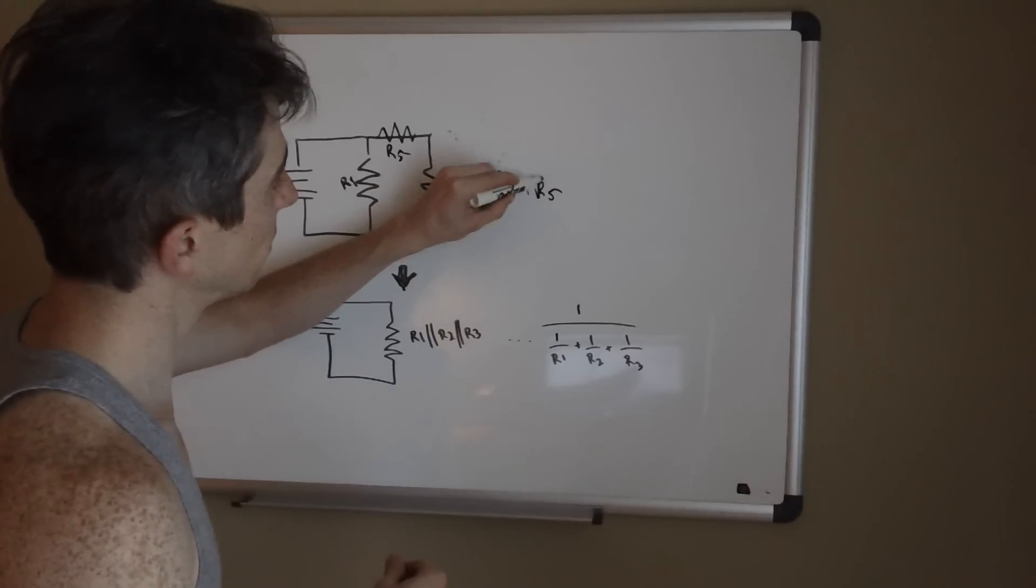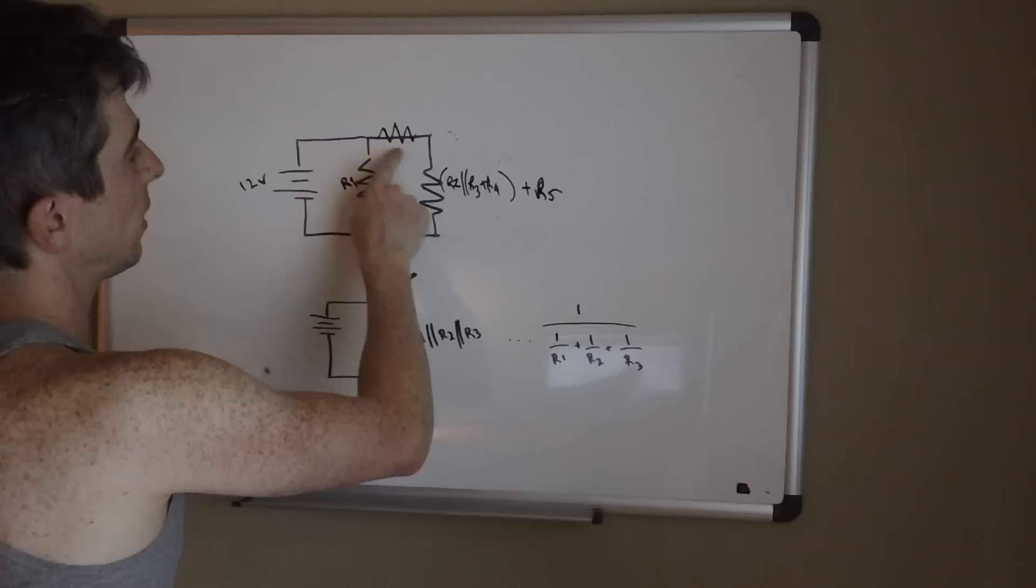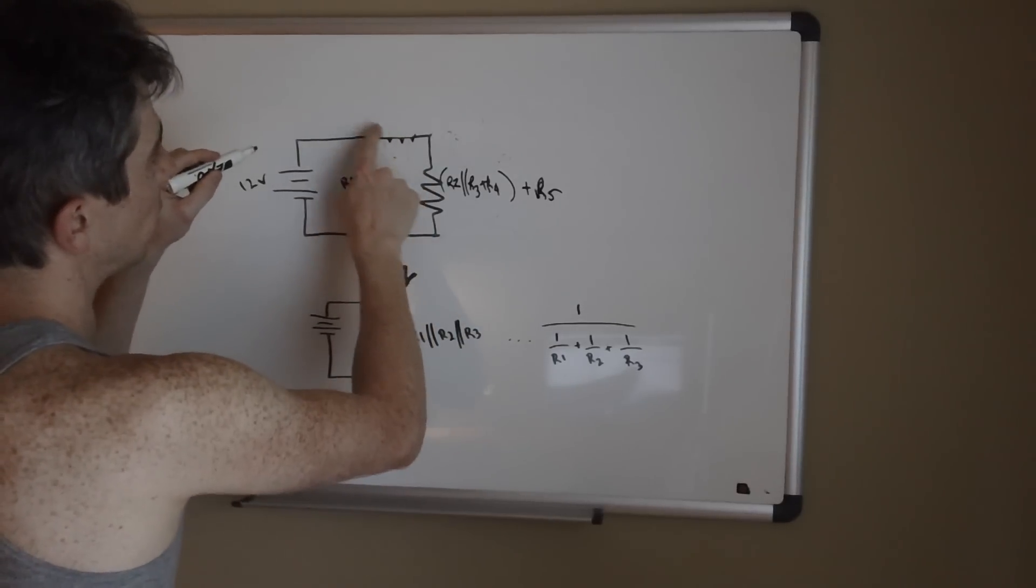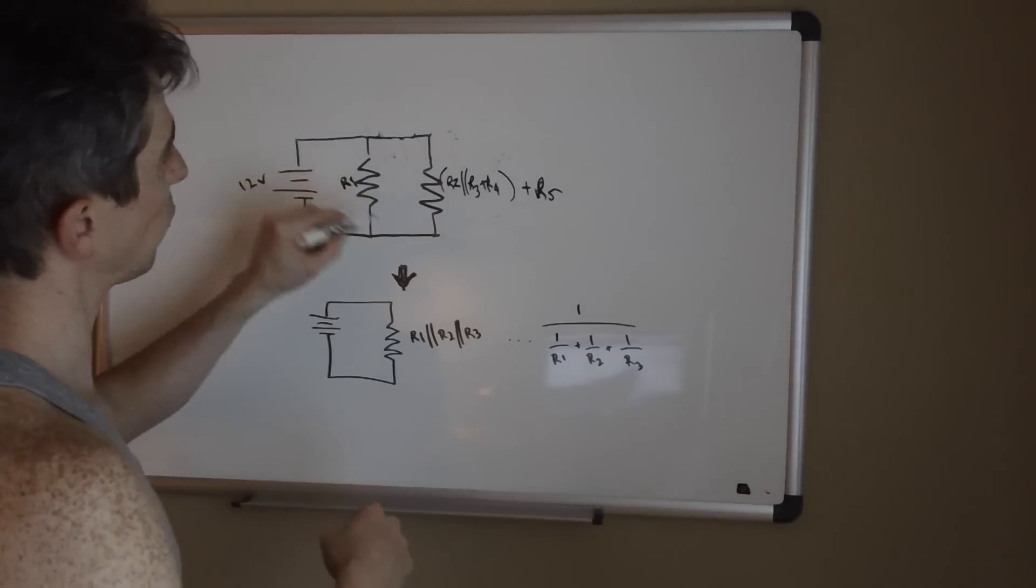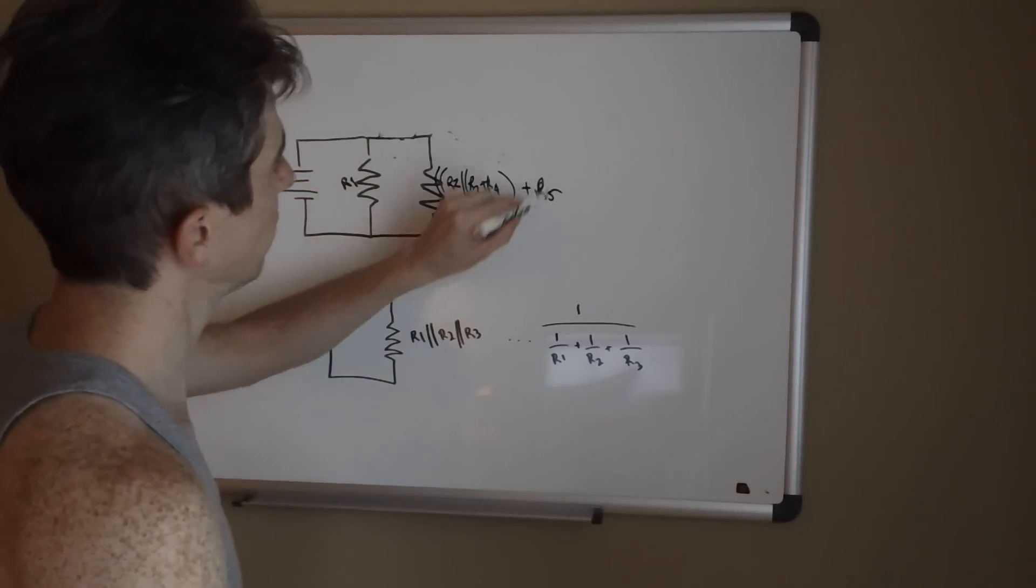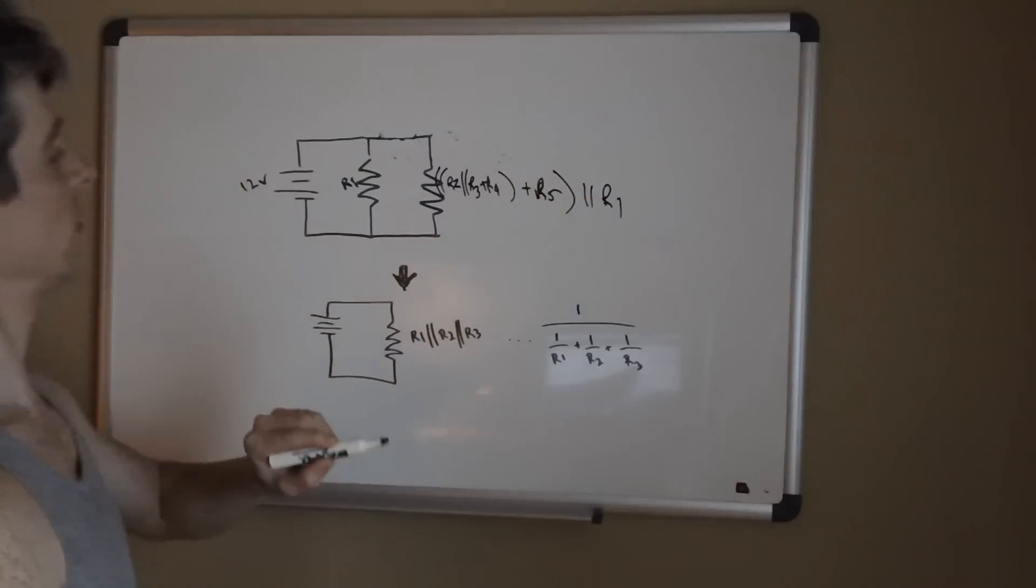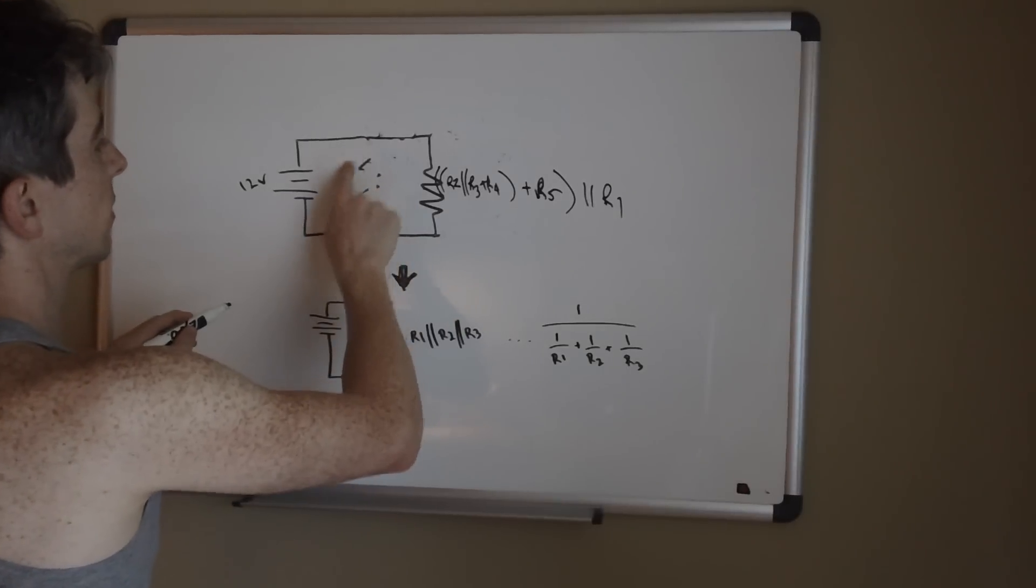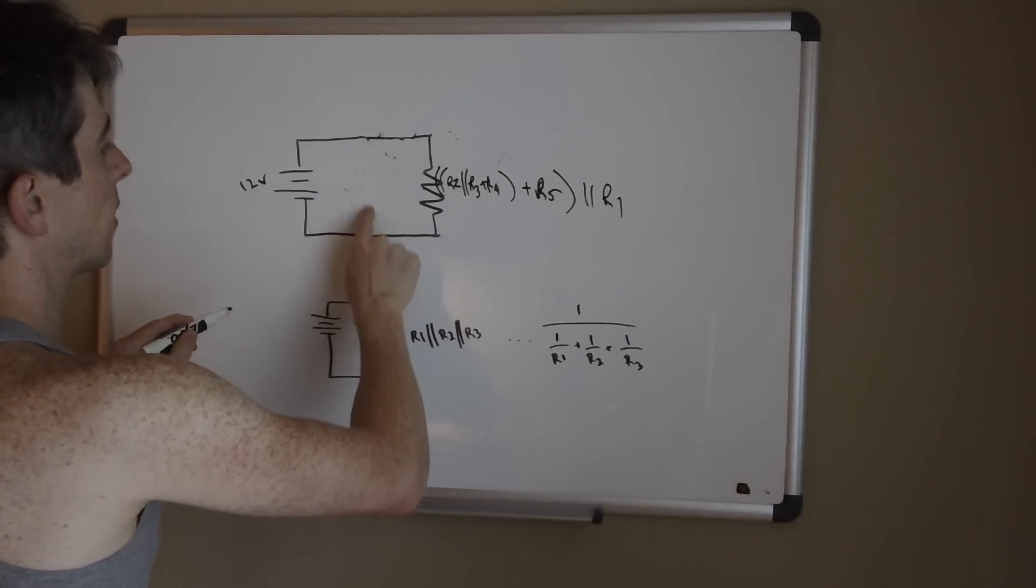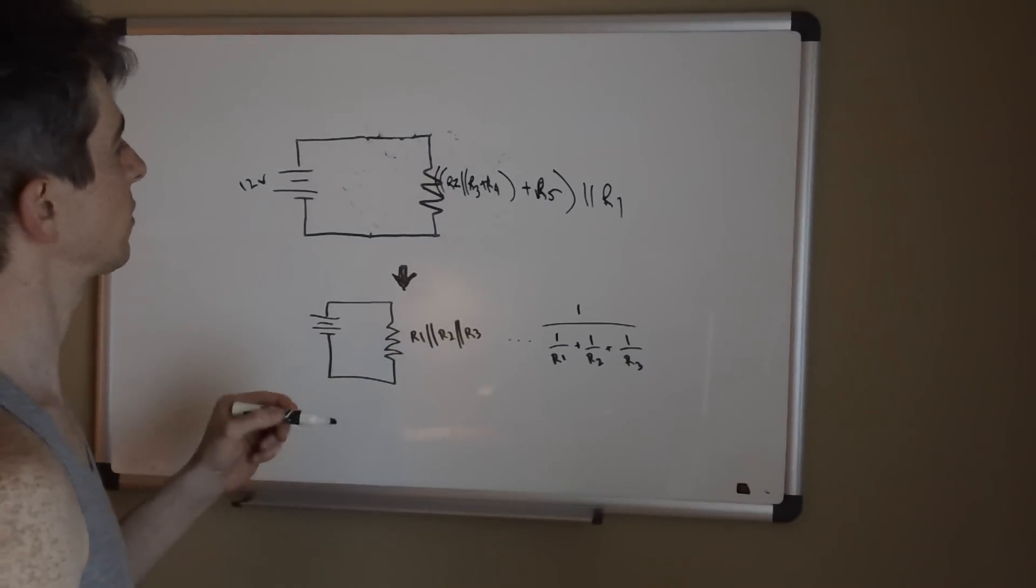So then this guy would go away, he would no longer be there. And then of course we would do this one more time, we have one more parallel set, so something like this with R1. Basically this guy would go away and that would end up being the idea of how you would solve in the most simplified form that circuit we started with.